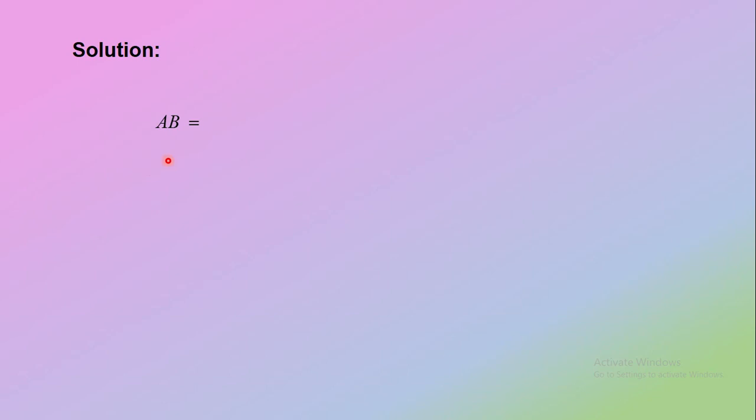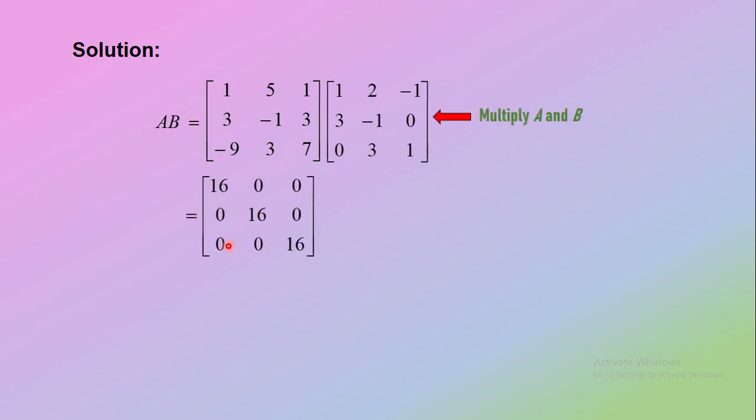First, find matrix AB by multiplying matrix A and matrix B. Then we get the answer of a matrix with elements 16, 0, 0 for the first row, then 0, 16, 0 for the second row, and 0, 0, 16 for the third row.